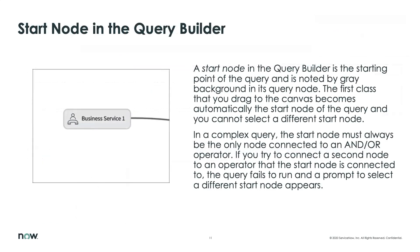When you connect classes on the canvas, the Query Builder displays the connection properties in the right sidebar where you can configure relationship directions. For service mapping queries, you can configure whether the query is for related or unrelated CIs. Now let's get into actually creating something.